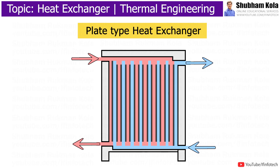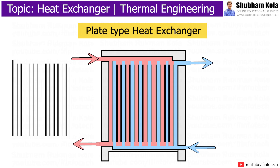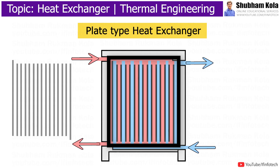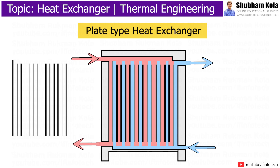Plate type heat exchangers are commonly used in water heaters, and consist of metal plates. These metal plates form channels through which interacting fluids can flow. With the use of multiple layers of flat plates fixed to form a series of channels for fluid flow, metallic plates are used for separating the two fluids.